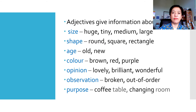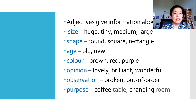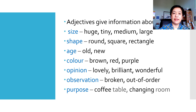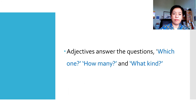So, in summary, adjectives give information about the following: Size, Shape, Age, Color, Opinion, Observation, and Purpose. Adjectives answer the questions: Which one? How many? And what kind?